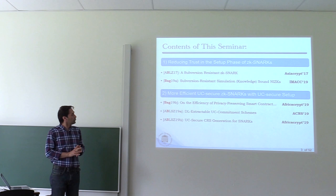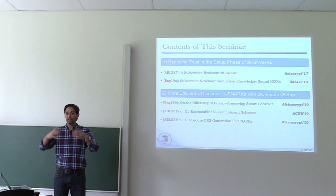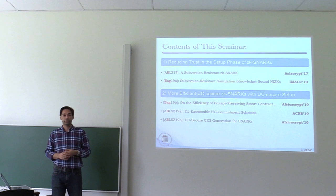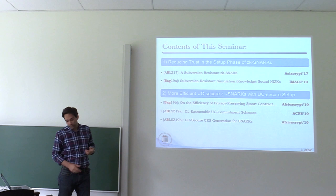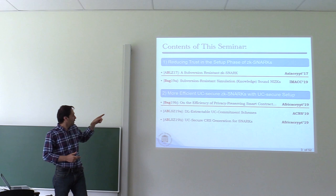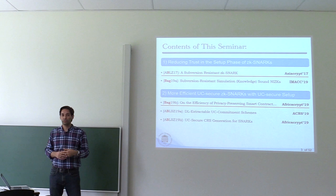This presentation will be in two parts. The first part covers how to reduce trust to the third party in the CRS model. The second part covers constructing more efficient UC-secure ZK-SNARKs that appear in UC-secure applications like HAWK for smart contracts. These are some publications related to this topic; today I will mostly cover the first result published in HICrypt 2017, which was one of the top three papers and was invited to the Journal of Cryptography, and the second published in AfricaCrypt.